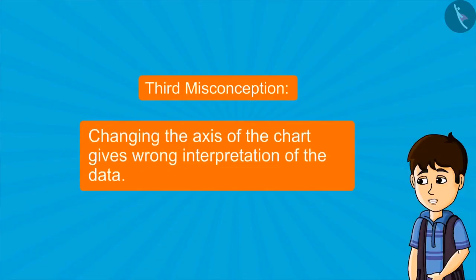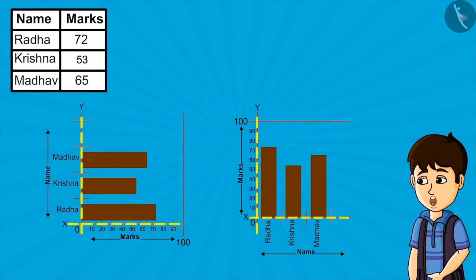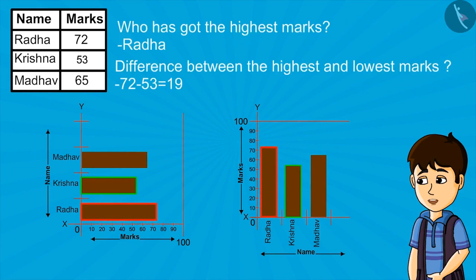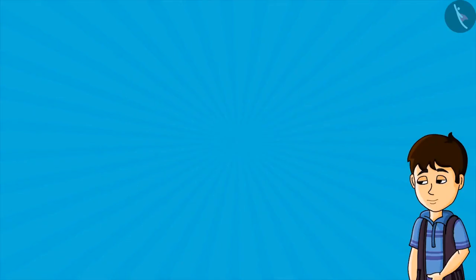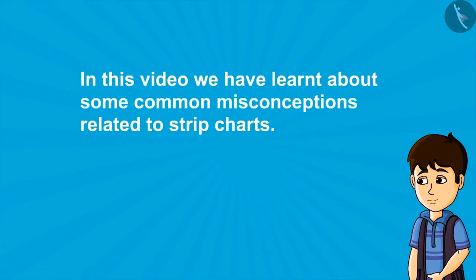Some people also believe that changing the axis of the chart gives wrong interpretation of data. Look at both these charts carefully. We have only changed the coordinate axis, but still we are getting the same information from the data — who has got the highest marks, the difference between the highest and lowest marks, etc. So we can say that changing the axis of the chart doesn't change the interpretation of data. So kids, in this video we have learnt about some common misconceptions related to strip charts.